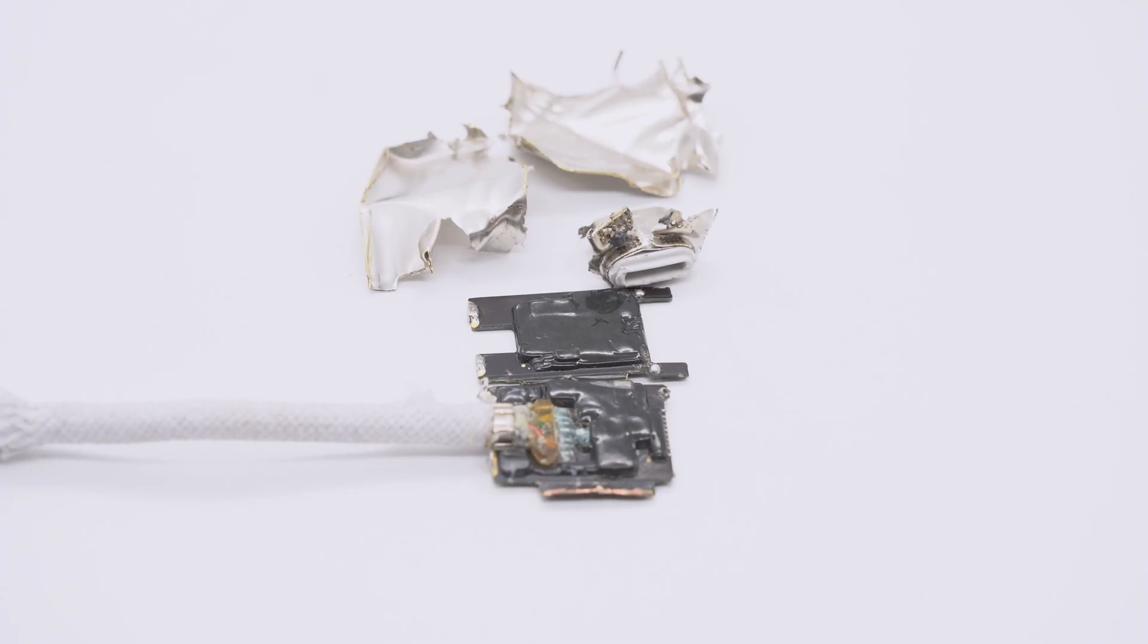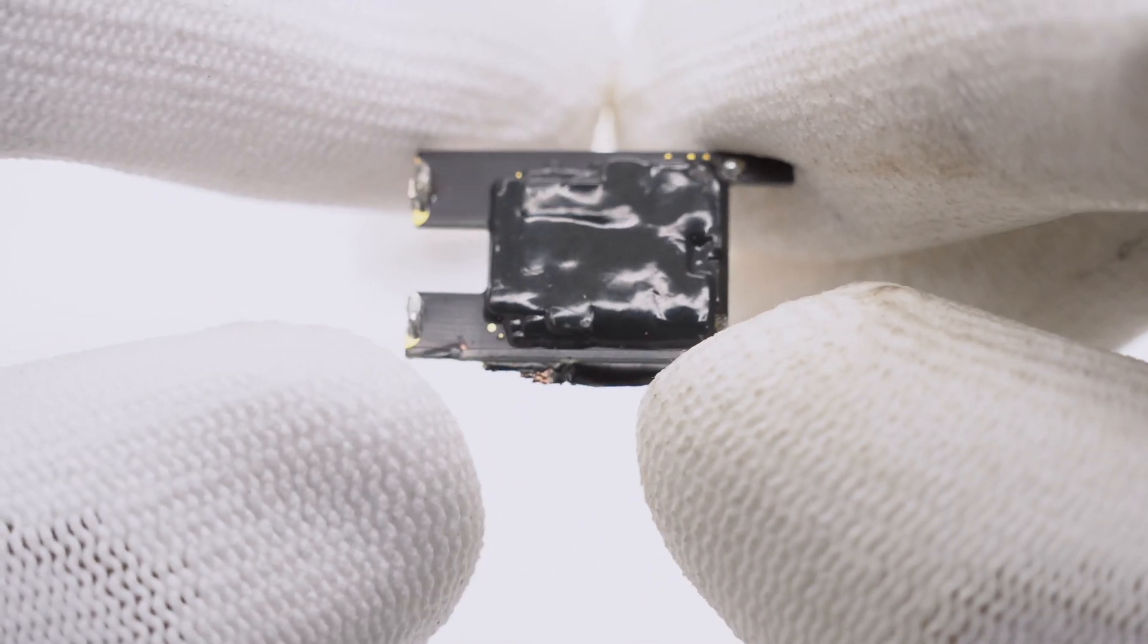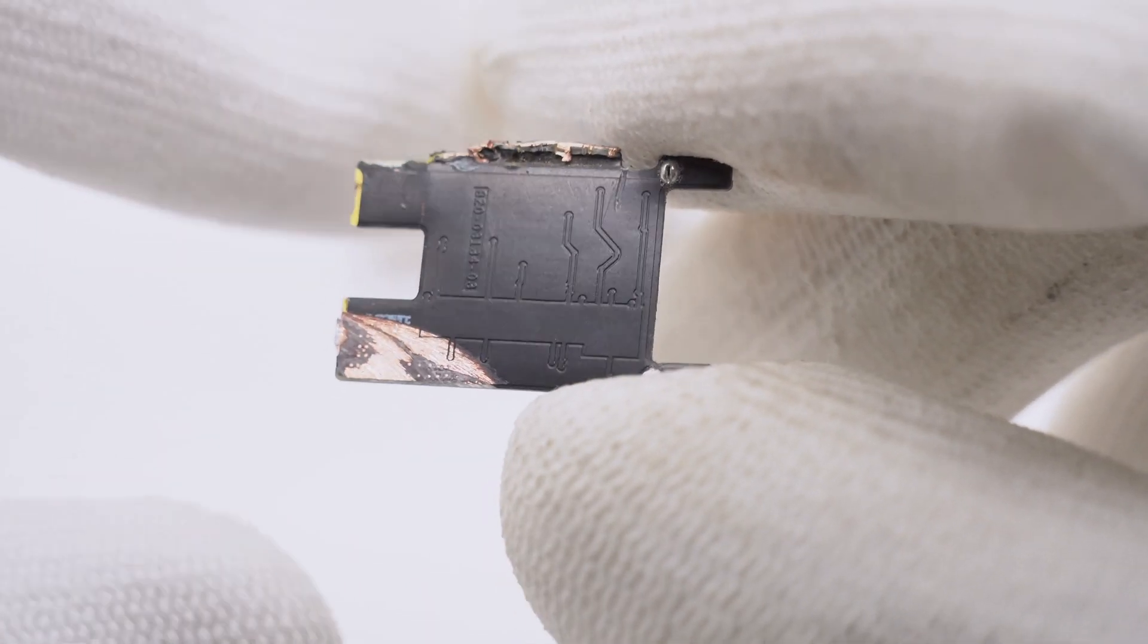After removing the steel sleeve, there are two PCBs inside, which are connected together. The first PCB is covered with a lot of potting compound, and nothing on the back.